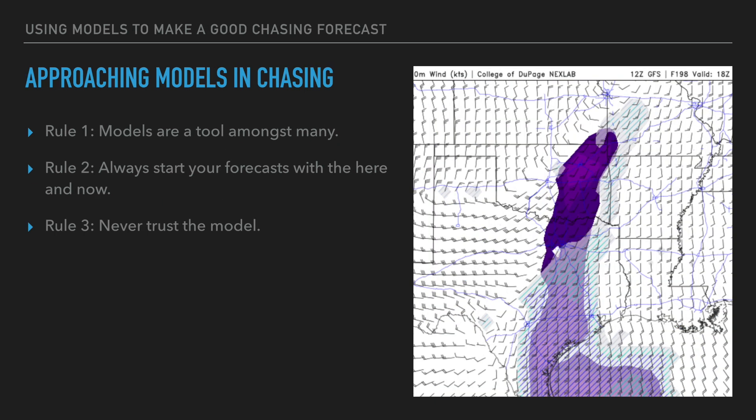So let's get to a practical level. How do we approach models in chasing? If you are chasing today, what are you looking for? I have three rules for this. Rule number one: models are a tool amongst many — remember that. Rule number two: always start your forecast with the here and now. And rule number three: never trust the model. Let's dive into each of these rules.